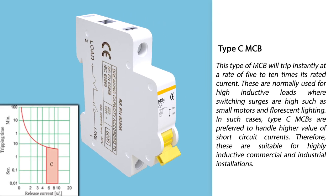Type C miniature circuit breaker: this type will trip instantly at a rate of five to ten times its rated current. These are normally used for high inductive loads where switching surges are high, such as small motors and fluorescent lighting. In such cases, Type C is preferred to handle higher values of short circuit currents, making these suitable for highly inductive commercial and industrial installations.